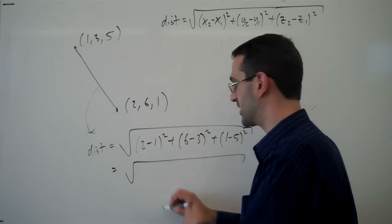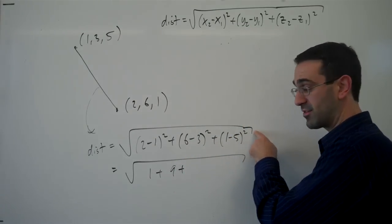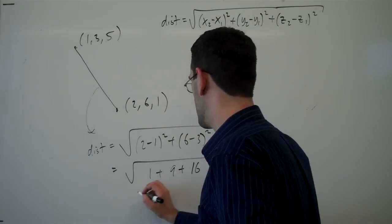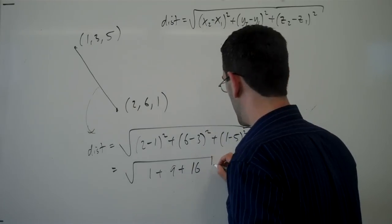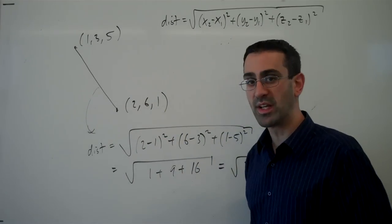So 1 squared is 1, 3 squared is 9, negative 4 squared is 16, and so we're ending up with square root of 26 as the distance between these points.